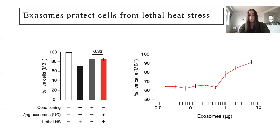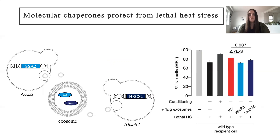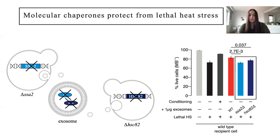This suggests increased exosome uptake correlates with increased cell survival by promoting proteostasis. Next, we wanted to confirm that chaperones were responsible for the protective effect. To do this, we took yeast cells and deleted one of their molecular chaperone genes, either SSA2 or HSC82, which means that cells no longer produce this protective protein, and therefore their exosomes no longer contain the heat shock protein. And as we expected, deleting molecular chaperones leads to no protection against lethal heat stress. This means that exosomal heat shock proteins are critical for proteostasis and therefore protection against lethal heat stress.